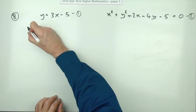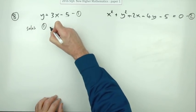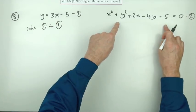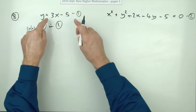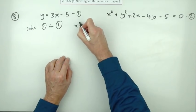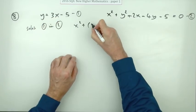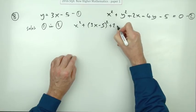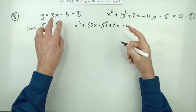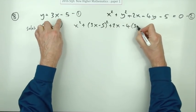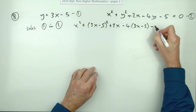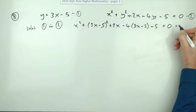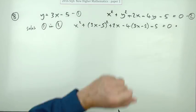But you'd probably do it just by showing that this line cuts that circle at two coincident points, not two distinct points. So you just go ahead and do substitute one in two, which means that wherever you see y in this one you're going to replace it with what y is equal to. So I've got x squared plus y 3x minus 5 squared plus 2x minus 4y, which is 3x minus 5. Minus 5 equals 0. Doing that gives you the first mark, substituting the line into the circle.